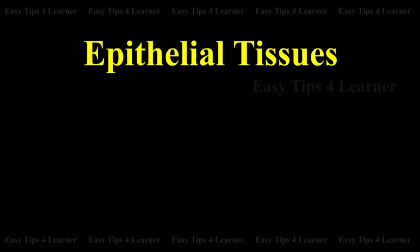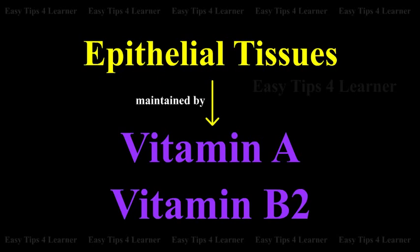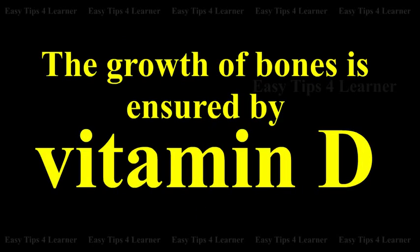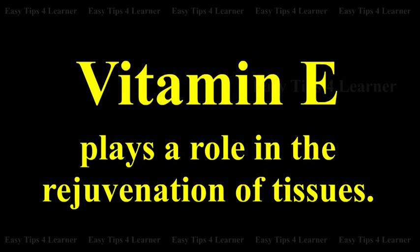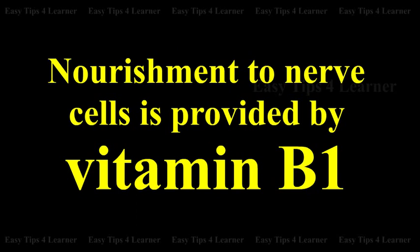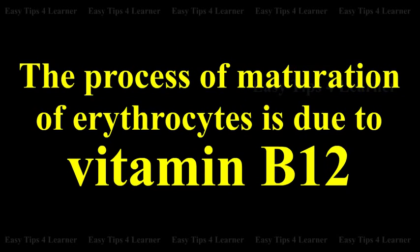The epithelial tissues of the body are maintained by vitamin A and B2. The growth of bones is ensured by vitamin D. Vitamin E plays a role in the rejuvenation of tissues. Nourishment to nerve cells is provided by vitamin B1. The process of maturation of erythrocytes is due to vitamin B12.